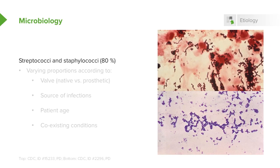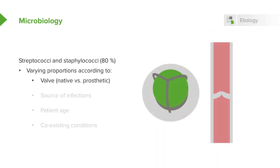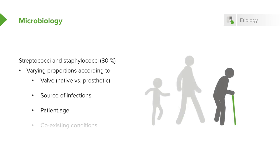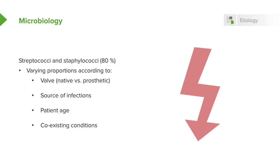About 80% of endocarditis is due to streptococci or staphylococci, in varying proportions depending on whether it's a native or prosthetic valve and what the source of infection is. If it follows a dental procedure, it's more likely to be a streptococcus; if it follows incision and drainage of a boil or furuncle, it's more likely to be staph. It's also somewhat dependent on the patient's age and coexisting conditions.